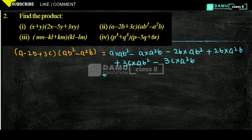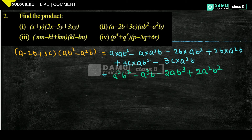So what we have to take here is: a into ab² gives a²b², minus a into a²b gives a³b, minus 2 into ab³ gives 2ab³, plus 2 into a²b² gives 2a²b², plus 3 into ab²c gives 3ab²c, minus 3 into a²bc gives 3a²bc.